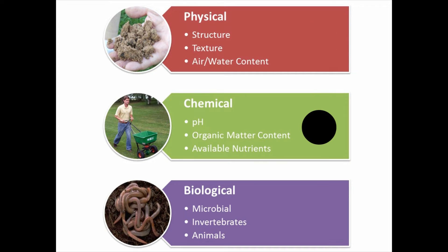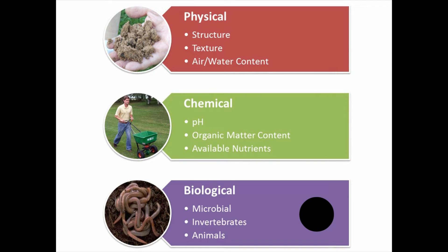Chemical properties are things we usually associate with soil tests: the pH, the amount of organic matter in the soil, and the plant-available nutrients. Biological properties are really important as we stressed in the introduction. Biology is an often-overlooked but really important part of the soil — we're talking about microscopic microbial organisms, but also the larger animals that live in the soil.